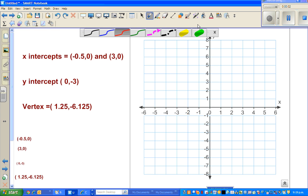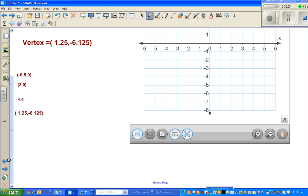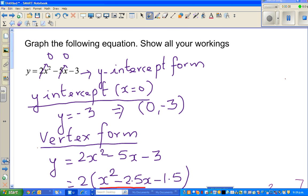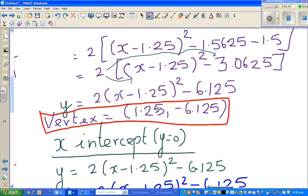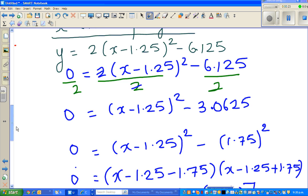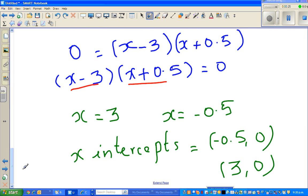So continuing from my last video, let me go over what we did. We saw the y-intercept is 0, negative 3. We saw the vertex is 1.25, negative 6.125, and the x-intercepts were negative 0.5 and 3.0.